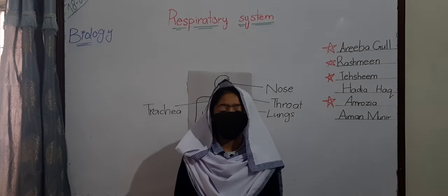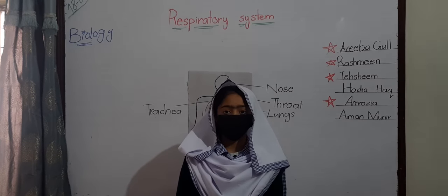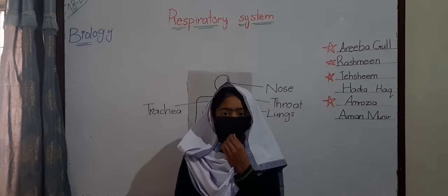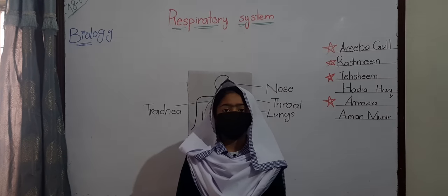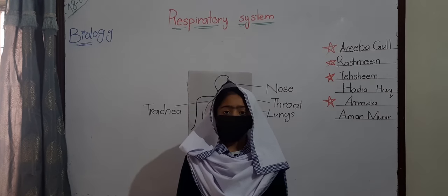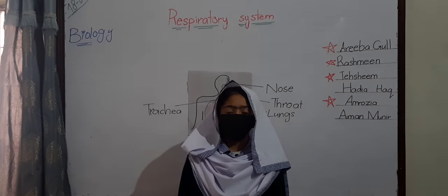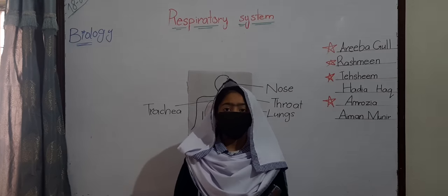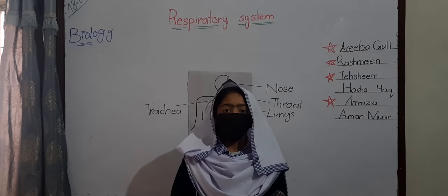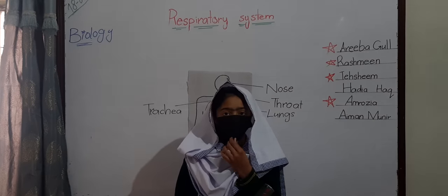Assalamualaikum. My name is Ariba Gul from Samson Foxtor. Today I want to tell you about the respiratory system. Respiration is the process in which food and oxygen combine to make energy. The parts of the body that help in respiration form the respiratory system.